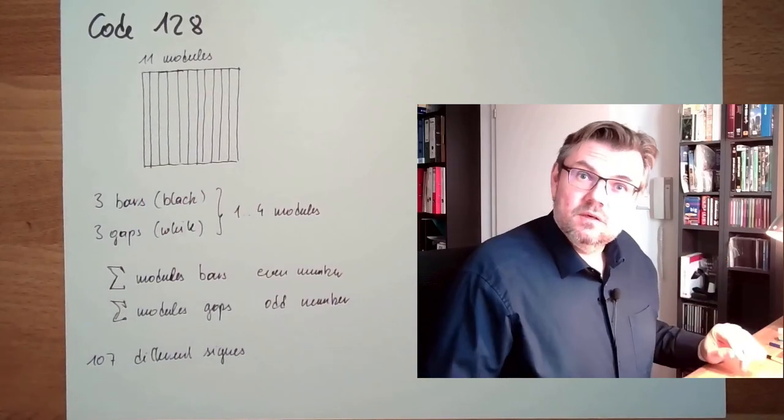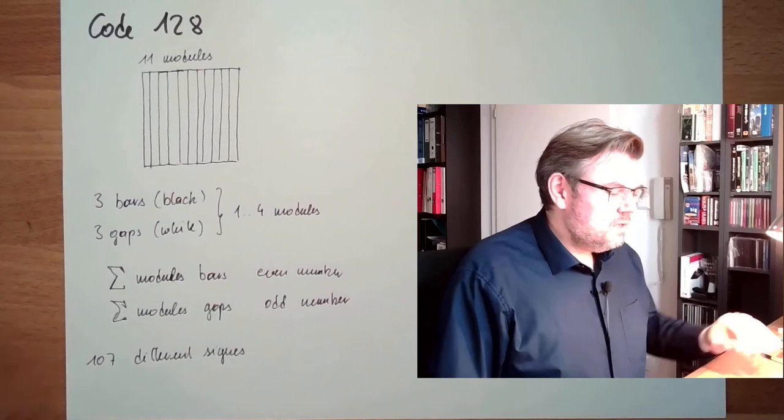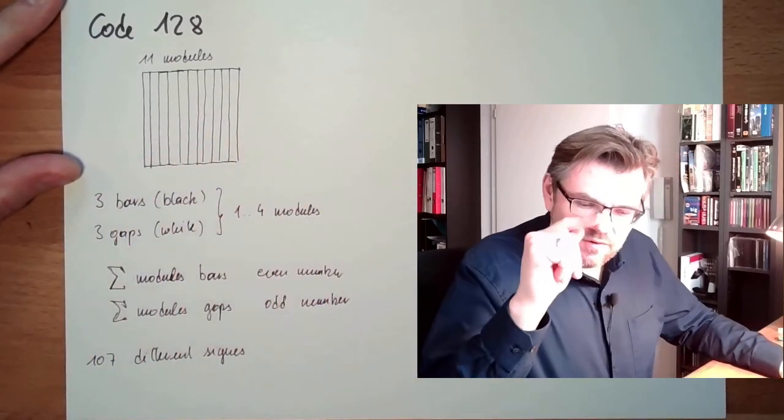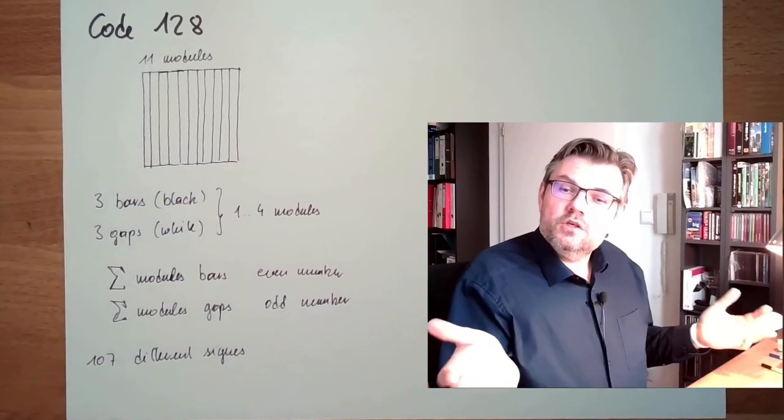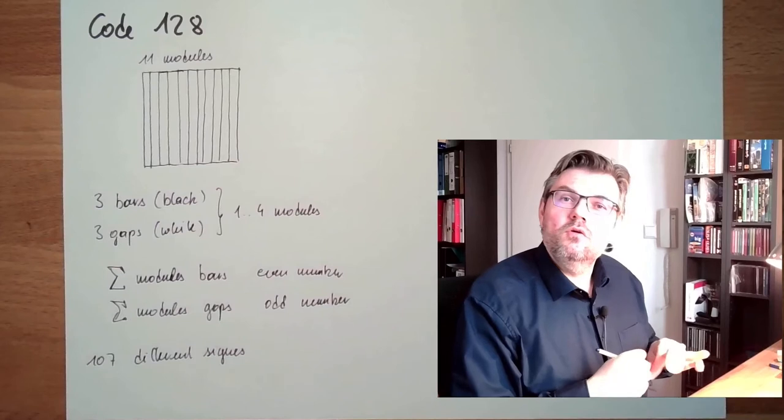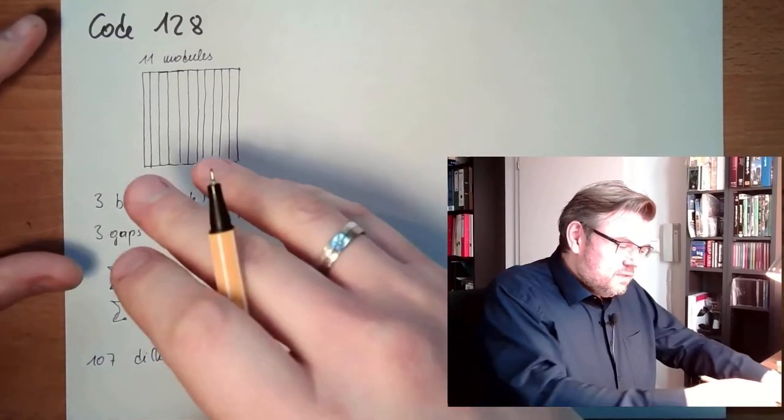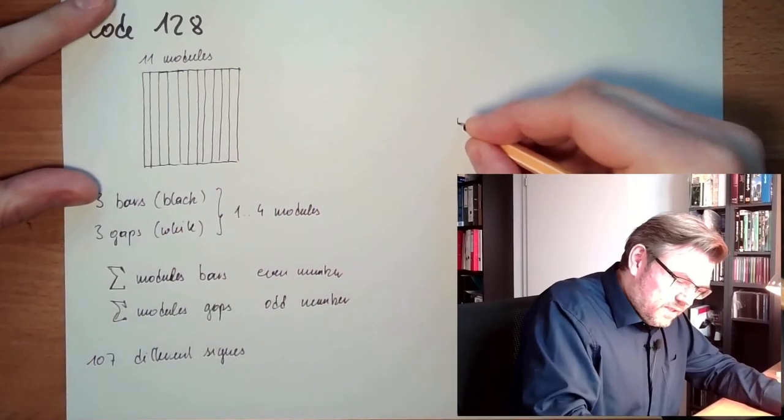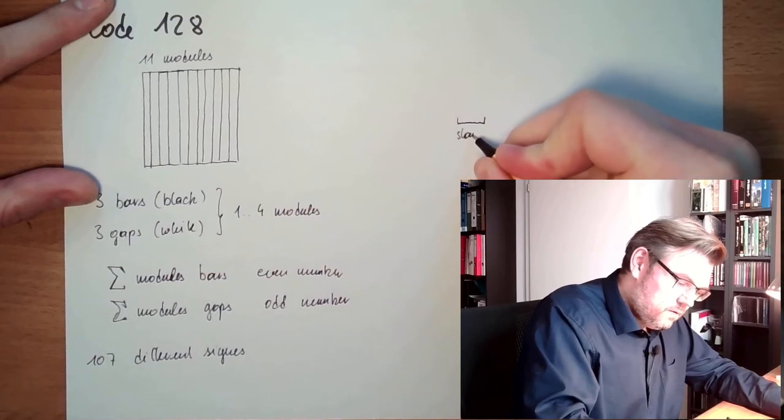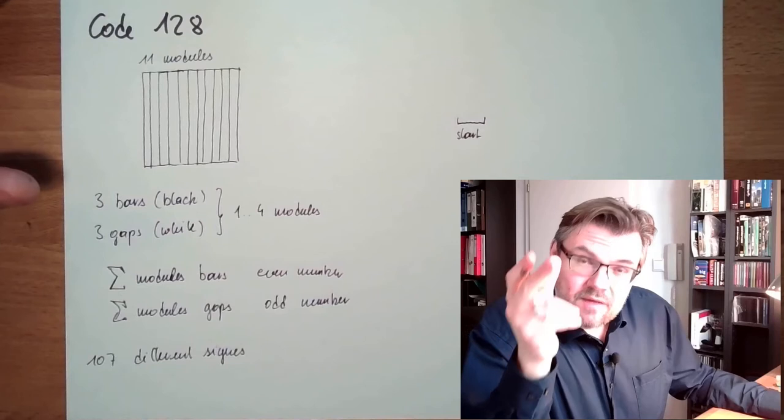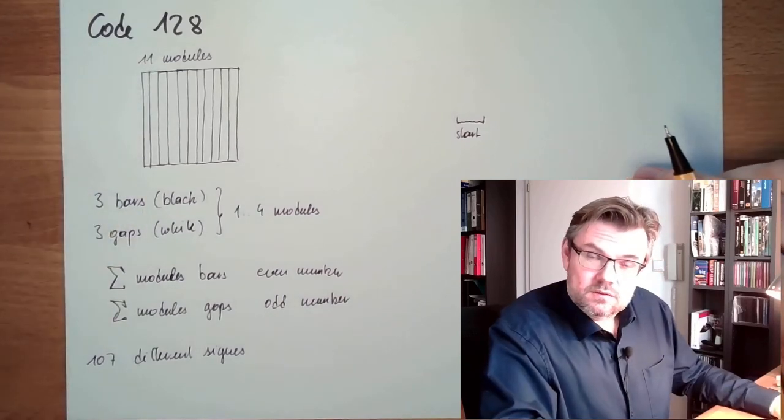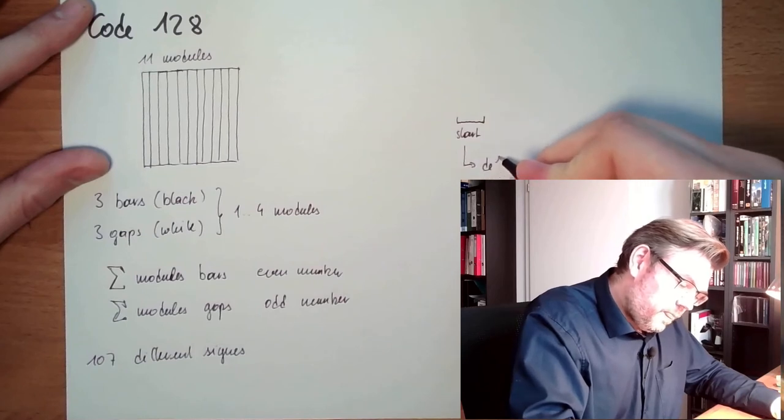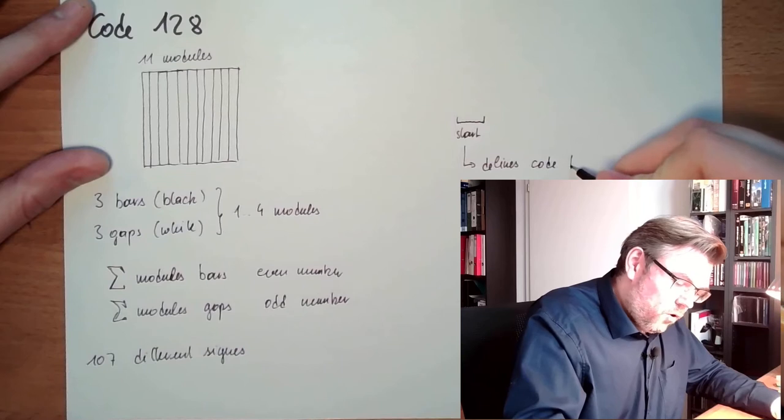All the different patterns, the different possible patterns here, they are organized in so-called code tables. And there are three of these code tables. One and the same pattern has a different meaning depending on which code table we are using. But how should we know which code table we are using? Therefore, we have a short look at how this total code looks like. We start with a start sign, and there are three different start signs. Depending on which start sign I'm using, I already define the code table I'm using. The start sign defines the code table.